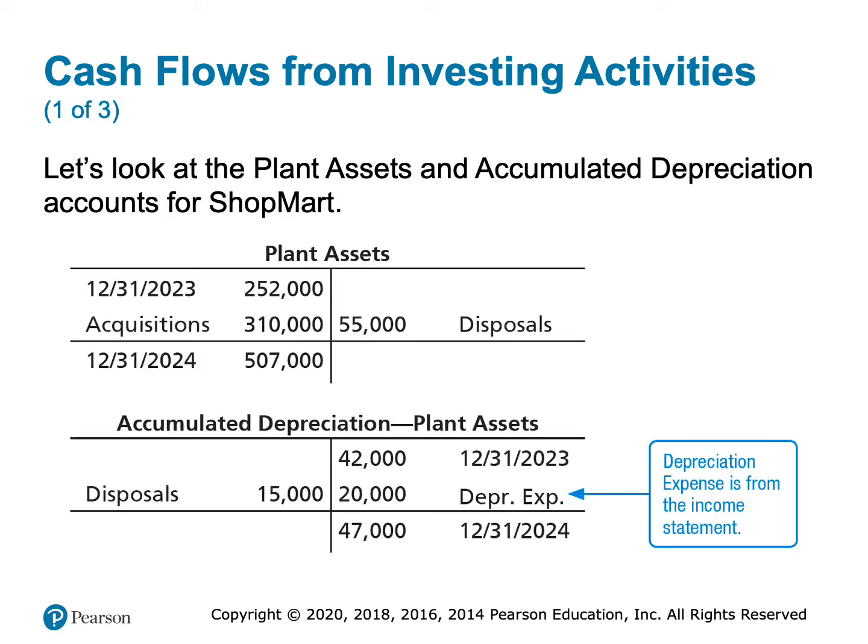It's helpful to look at T-accounts. Plant assets were $252,000 last year and $507,000 this year. We sold an asset with a historical cost of $55,000 — that's a credit of $55,000. And we purchased assets for $310,000 — that's a debit of $310,000. That equation balances out, giving us the ending balance of $507,000.